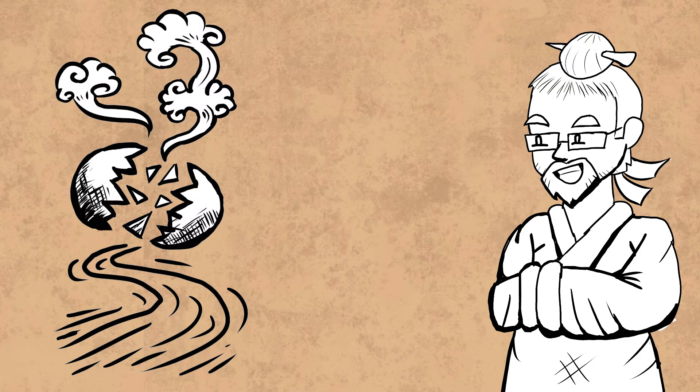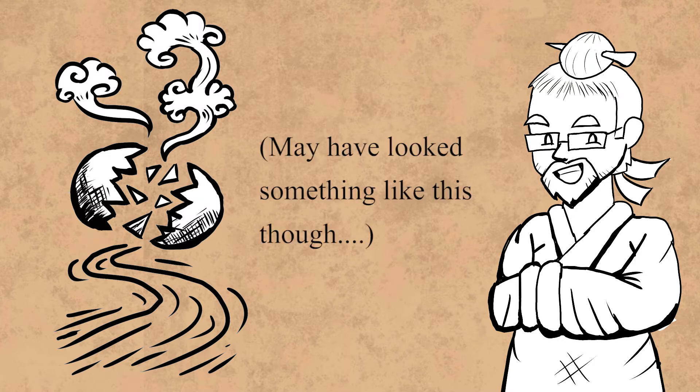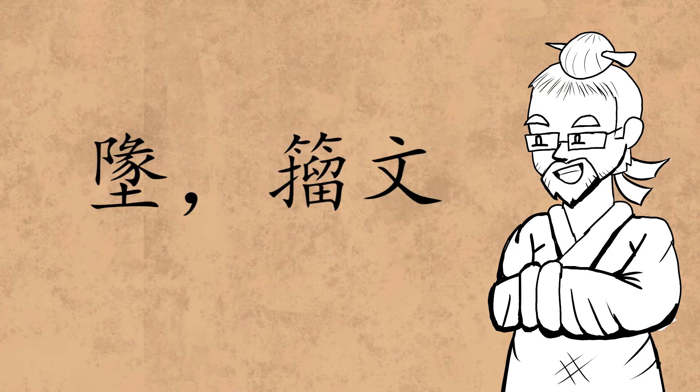I touched upon the Chinese creation myth in the last video, so I won't be repeating myself here, but we will come back to this myth a little later in the video. 说文 also lists an alternate character, referred to as a 籀文, or Zhou graph, which warrants some explanation.